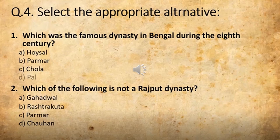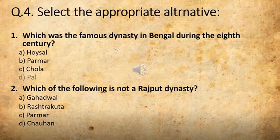This is a clear question wherein you can get the question and there are four options. You are going to select or click on the right option. We will revise it one by one. Which was the famous dynasty in Bengal during the 8th century? The options are: A) Koshal, B) Parmar, C) Chola, and D) Pal. The correct answer is D — Pal.